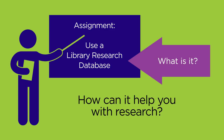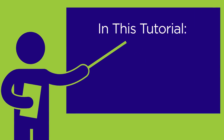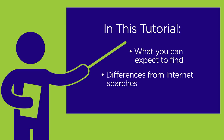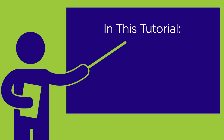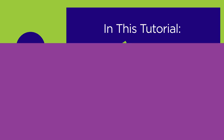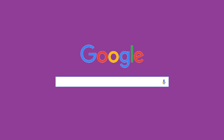But what is a library research database and how can it help you with your research? This tutorial will cover what you can expect to find in library research databases. It will go over some of the differences between what is available on the internet and what is available through library research databases, and it will discuss when you should use them. Please note that for the rest of this tutorial we will use the term library databases.